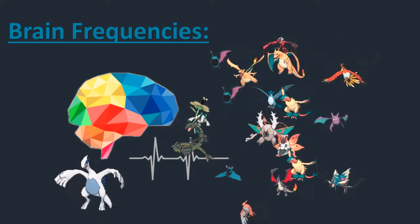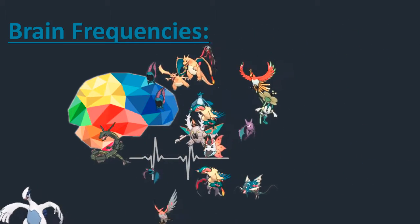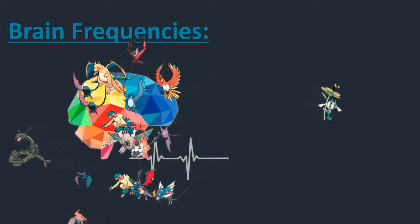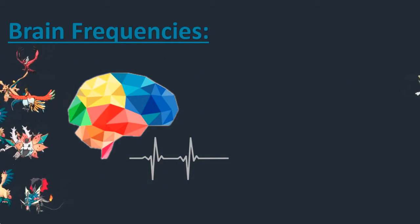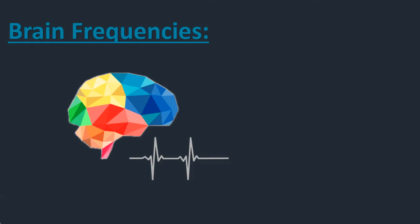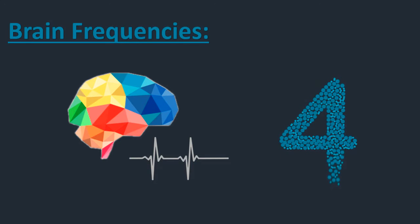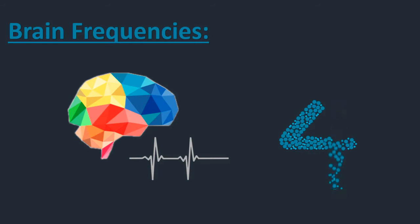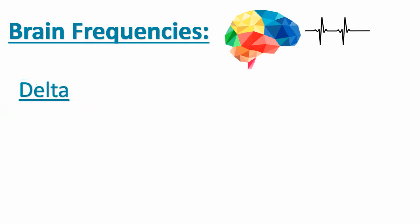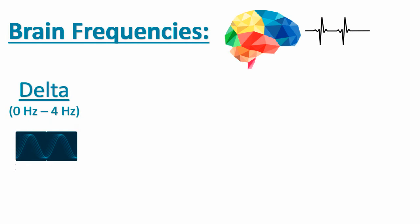Our brain operates on different frequencies and depending on which range of frequency it is operating upon, our mental state changes. Depending upon the range of frequencies, we have 5 general brain states, and I am only going to be discussing 4 of them. The first brain state is called the delta brain state, which ranges from about 0 Hz to 4 Hz. In this range, we are in a deep state of slumber — we are sleeping deeply.